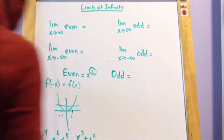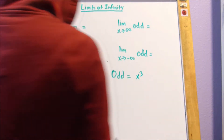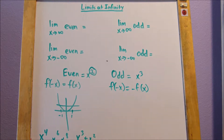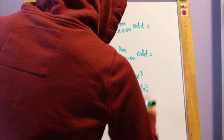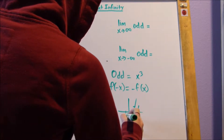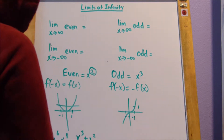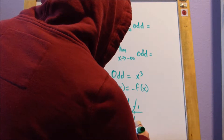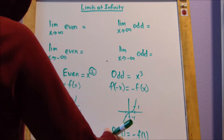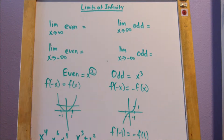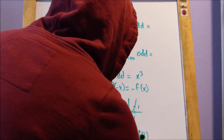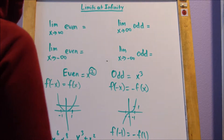Odd functions — an example is x cubed. The definition of odd functions is that f of negative x equals negative f of x. If I graph x cubed and pinpoint 1 and negative 1, f of 1 is 1 and f of negative 1 is negative 1 — those aren't the same. f of negative 1 equals negative f of 1 because f of 1 is 1, and f of negative 1 is negative 1. So odd functions have x cubed, x to the 5th, x to the 7th — these have to be the biggest exponent in the function.